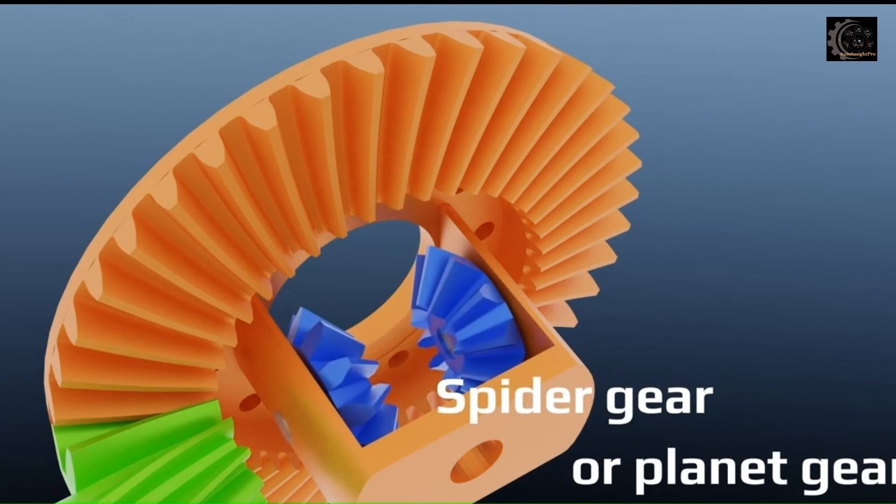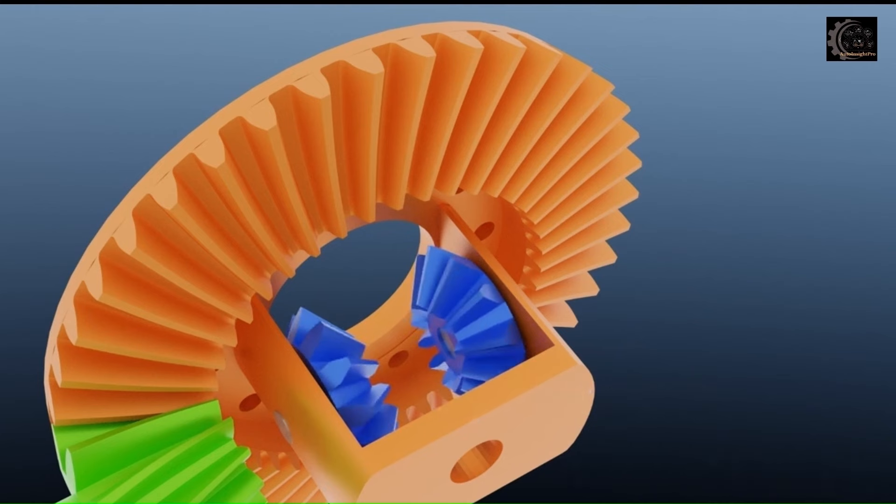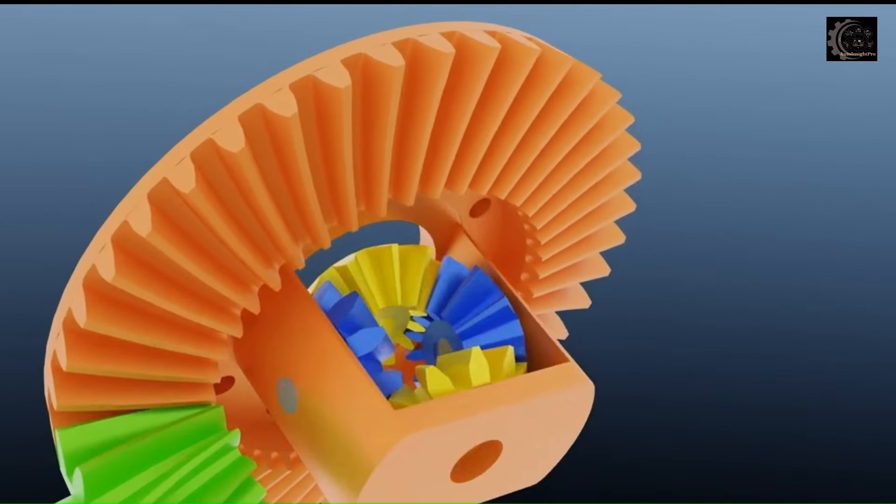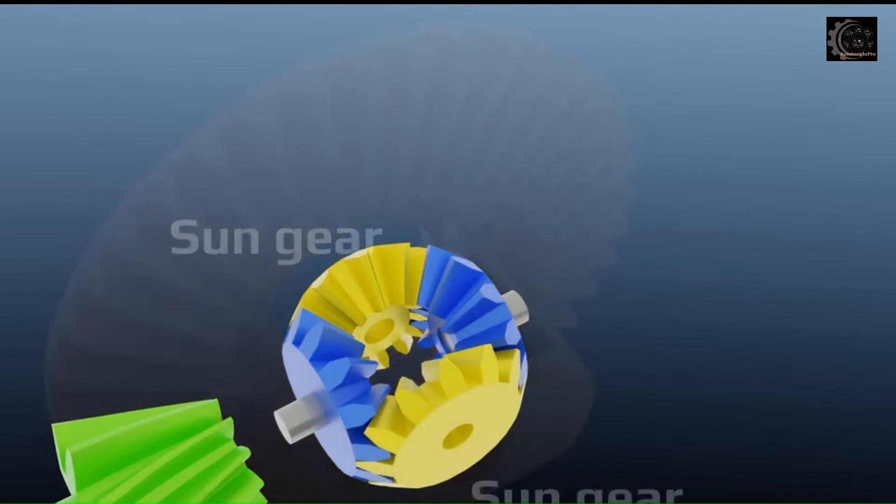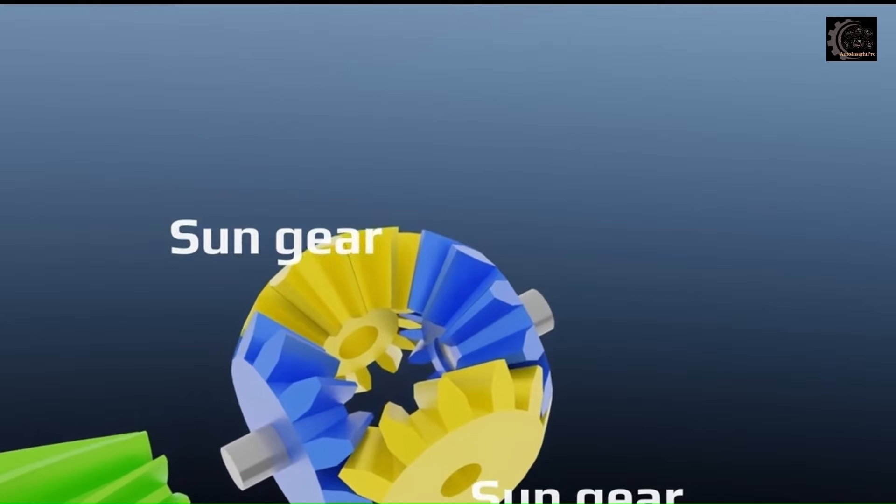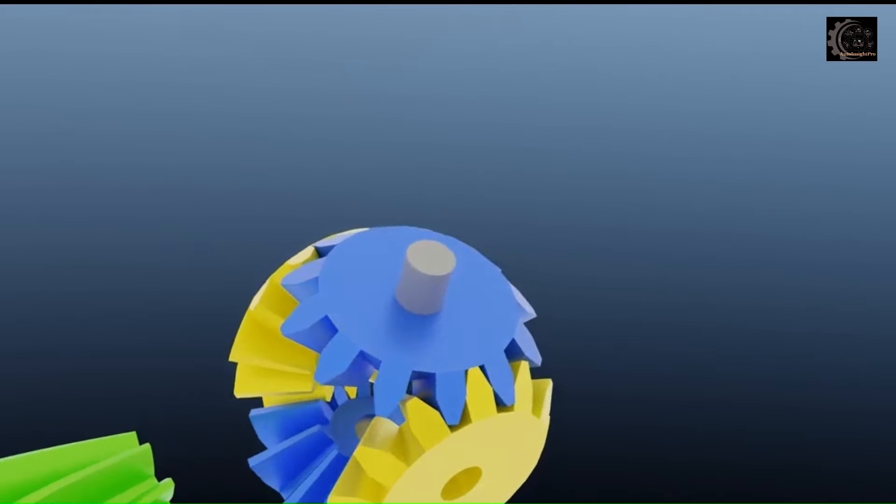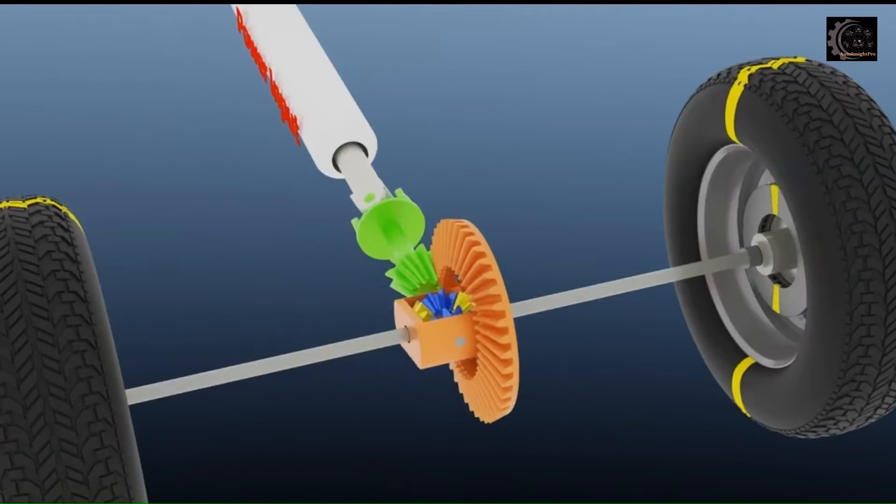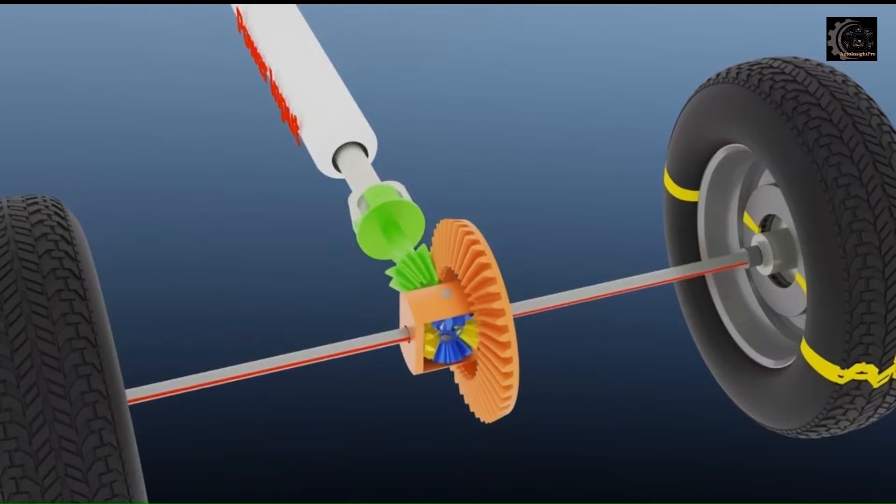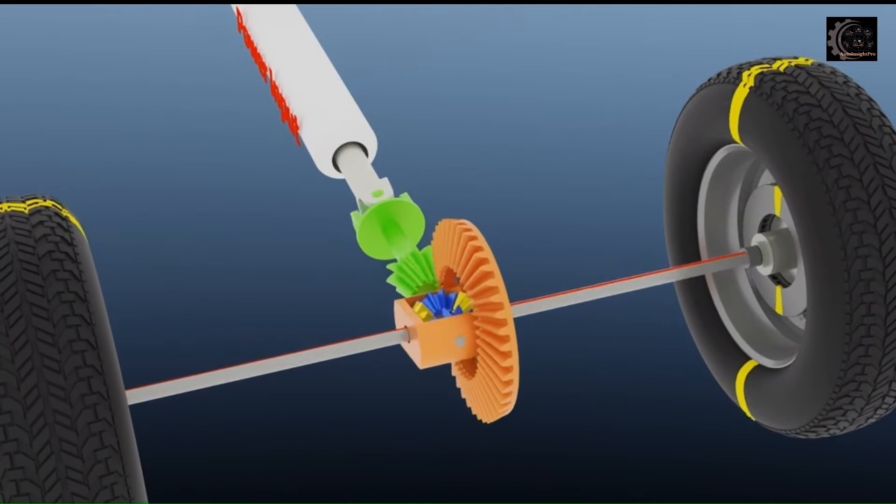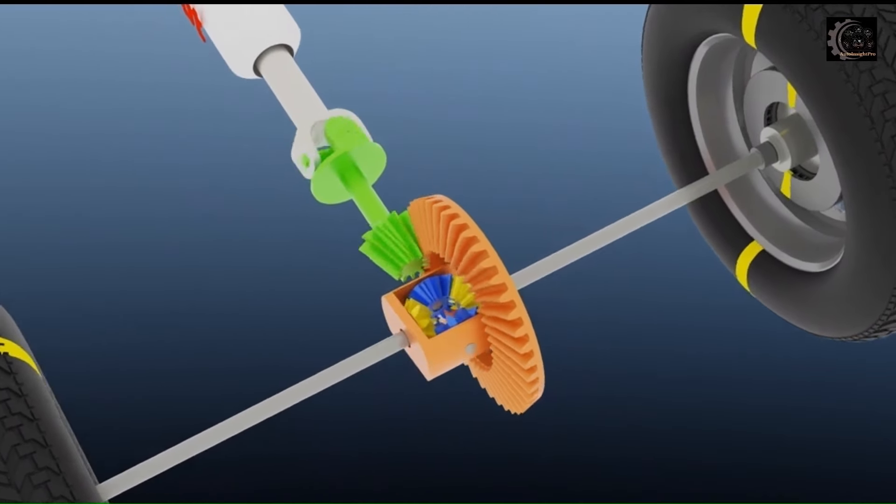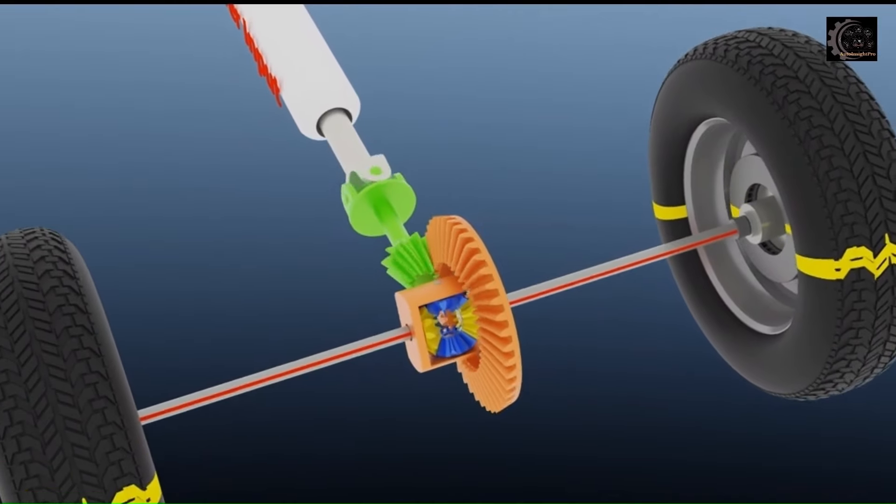So it can spin on its axis and also can rotate along with the crown gear rotation. These two are sun gears. Sun gears are in gear mesh contact only with the spider gears. So spider gears rotation makes it rotate too. Each sun gear is connected with its respective side drive axle. Drive axle makes the wheel rotate.